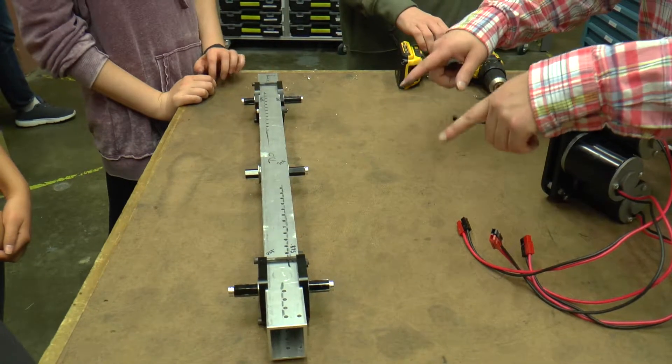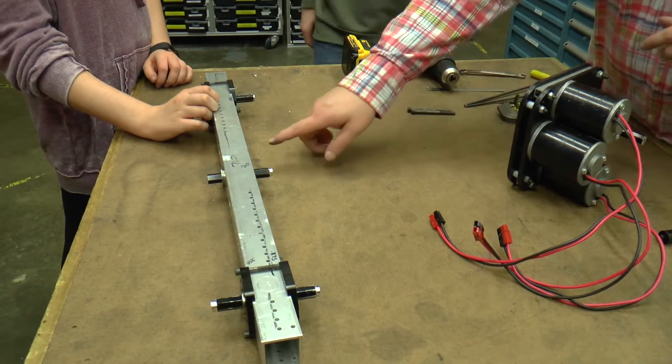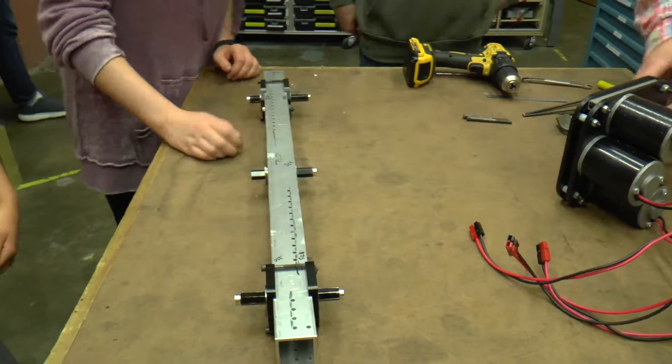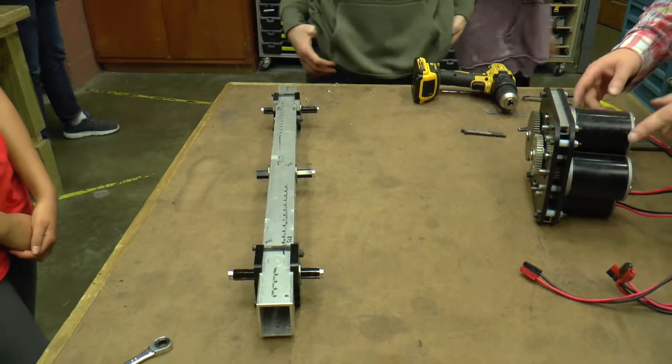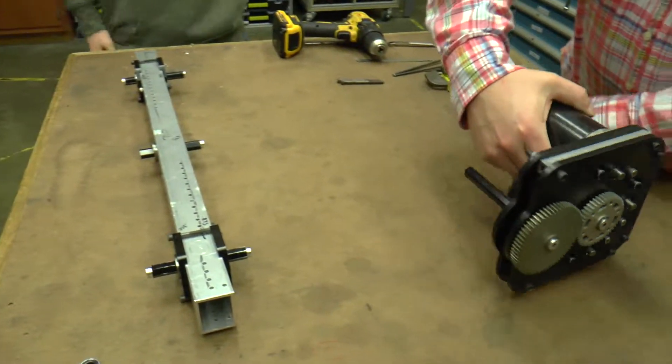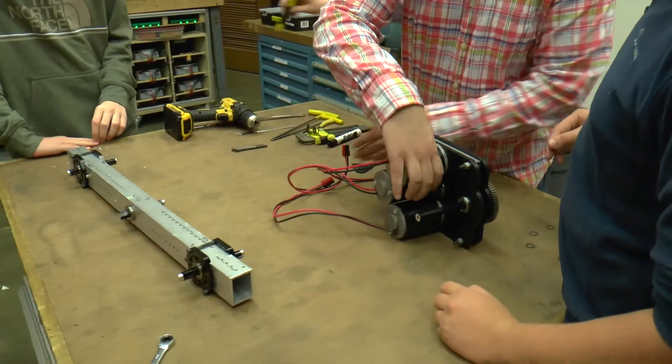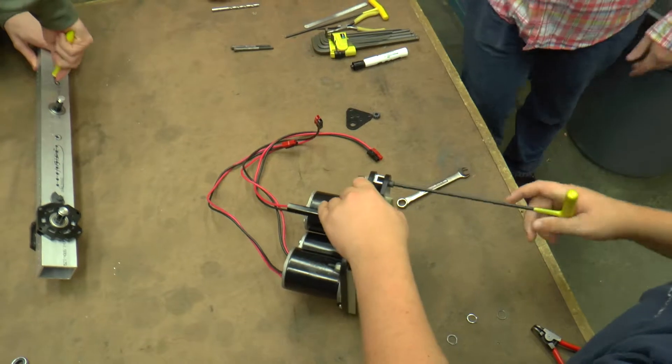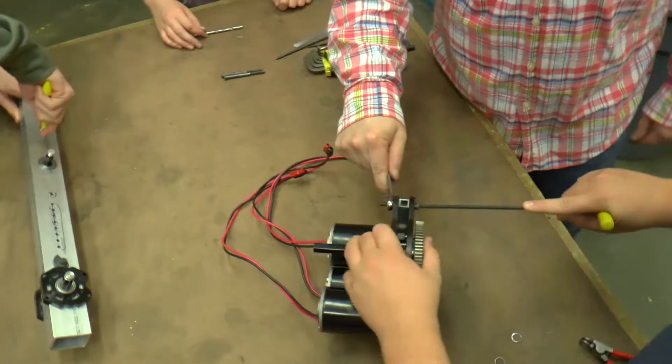On the side that's going to interface with this, let's deburr those holes so that there's no burrs that are going to chew into that. And in the meantime, somebody else can remove these two screws that were just here temporarily to hold the gearbox together. You need two tools for that job.